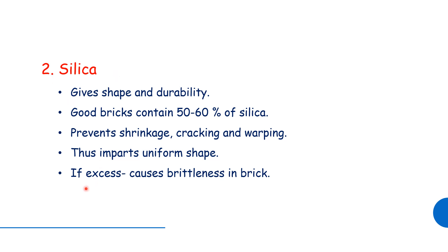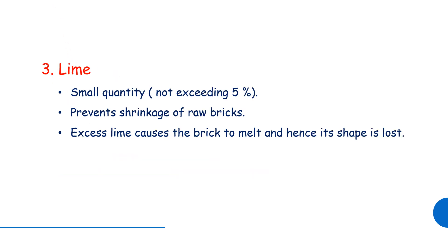The next ingredient is lime. A small quantity of lime is used — about 5% of lime. It is used as a shrinkage preventative. If lime is in excess, it will cause the brick to melt.